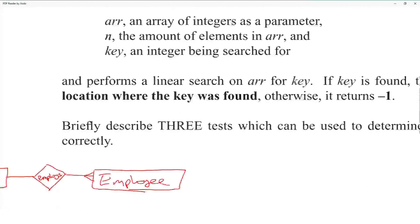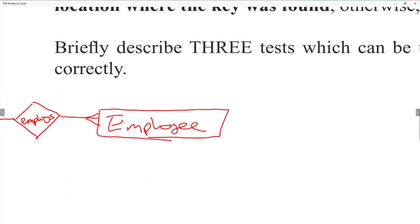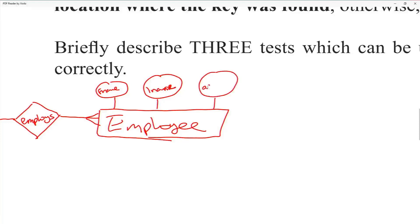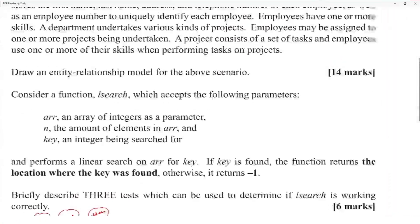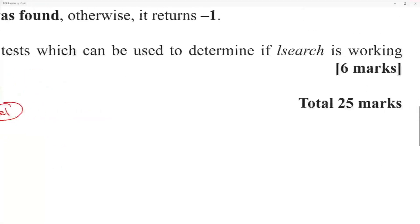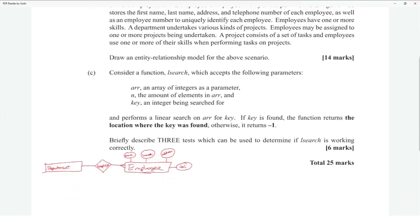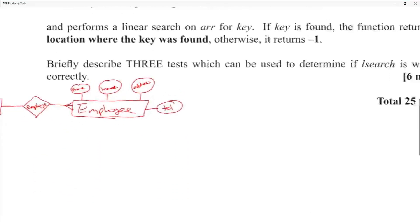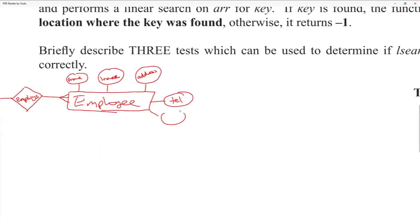The organization stores the following employee attributes: first name, last name, address, telephone number, and employee number.